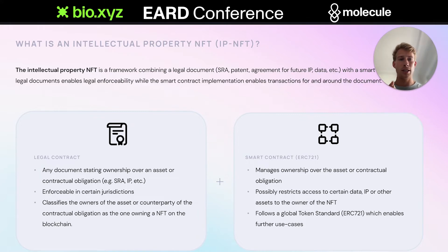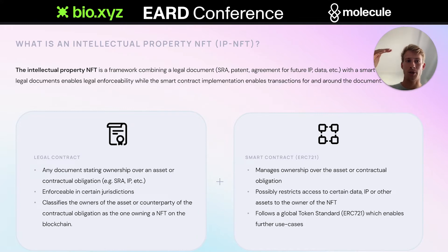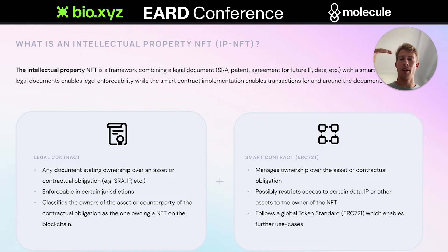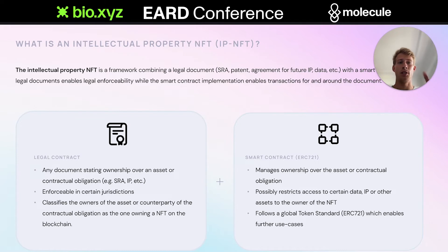You can think about it like a PDF where normally the counterparties are identified by name, address, and maybe further identifiers. In this case, the counterparties are identified by a smart contract address, a token, and potentially even by an address that is giving out that specific token. Now we've captured how legal contracts reference the smart contract — but how does the smart contract reference a legal contract? That comes back to what is being connected on-chain into the smart contract.